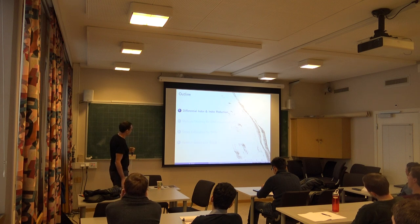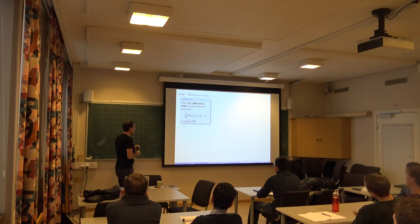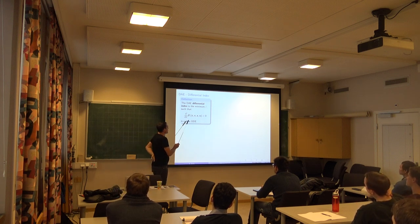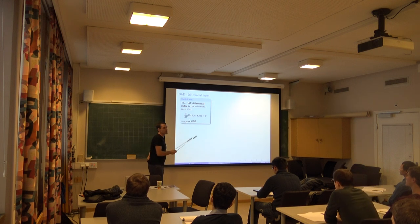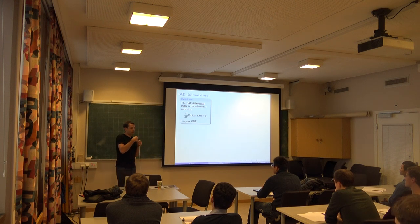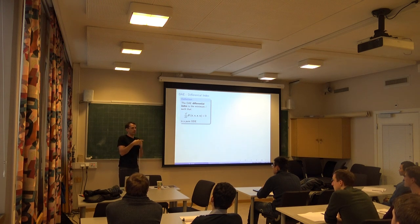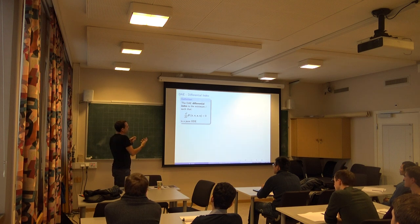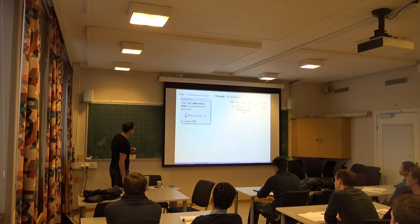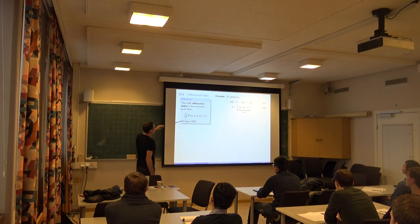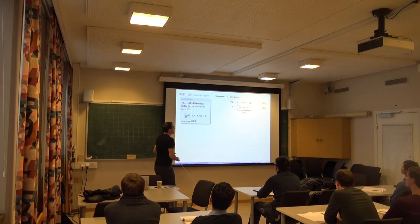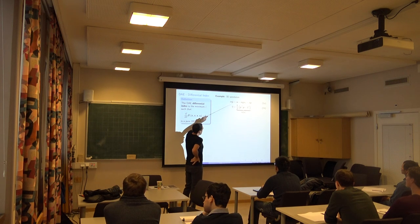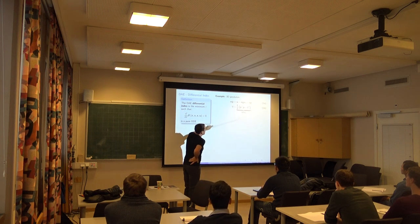The differential index is the number of times you need to differentiate your DAE with respect to time until you get a pure ODE. Each time you differentiate, Z-dot appears—and once Z-dot appears, you can treat it as a differential variable. This procedure can be nasty for complex DAEs, but in our simple example it's straightforward. I'm happy with the ODE part, so I shouldn't touch it. The problem is with the algebraic equation—it doesn't give me Z. So I try time-differentiating it.